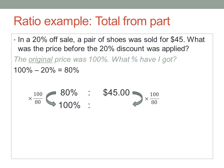So multiply the other side — the price — by the same fraction: 100 over 80. You'll want a calculator for this. The original price of the shoes was $56.25.